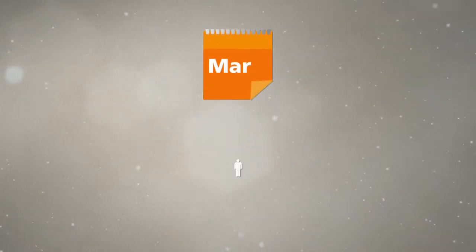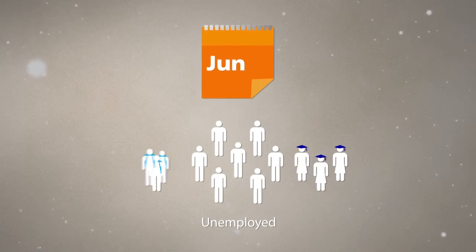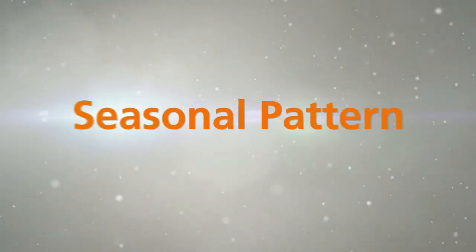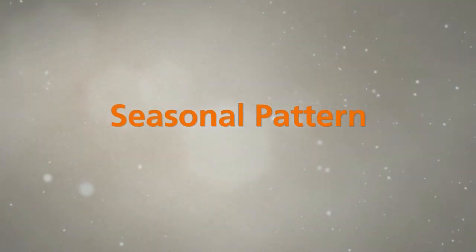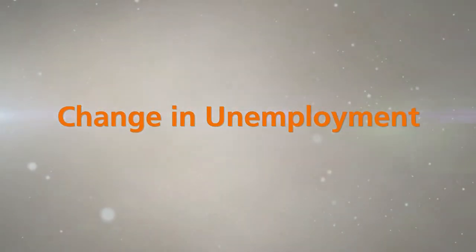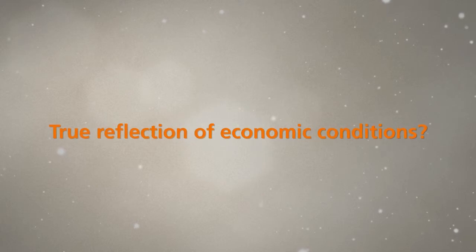Therefore, in a normal situation, unemployment will typically rise from March to June and drop from June to September. This recurring pattern, or what we call seasonal pattern, makes it difficult for us to tell if the change in unemployment is a true reflection of economic conditions.